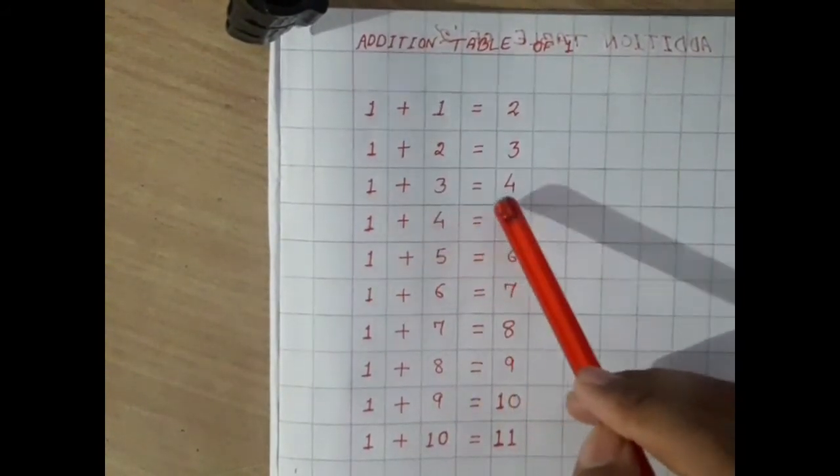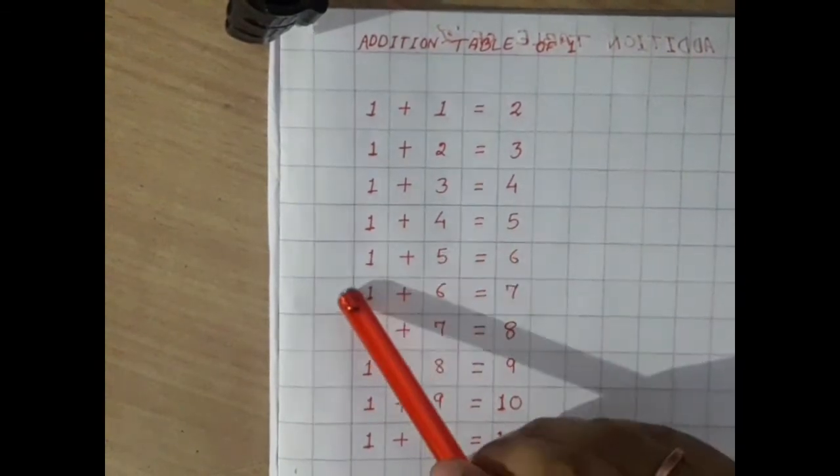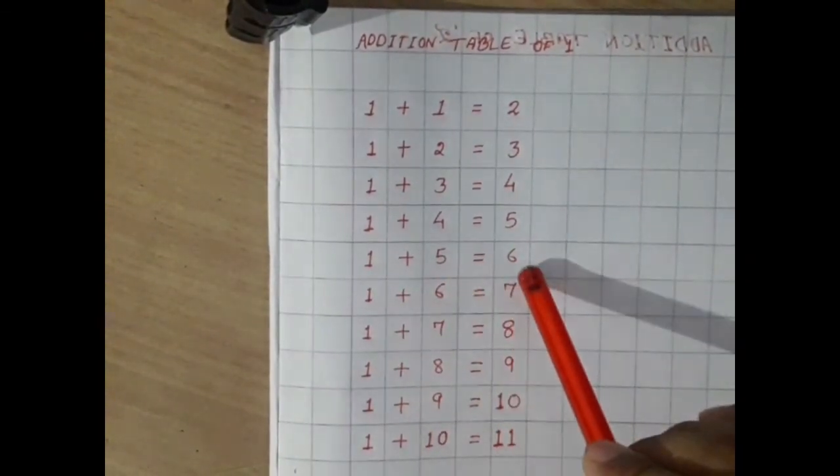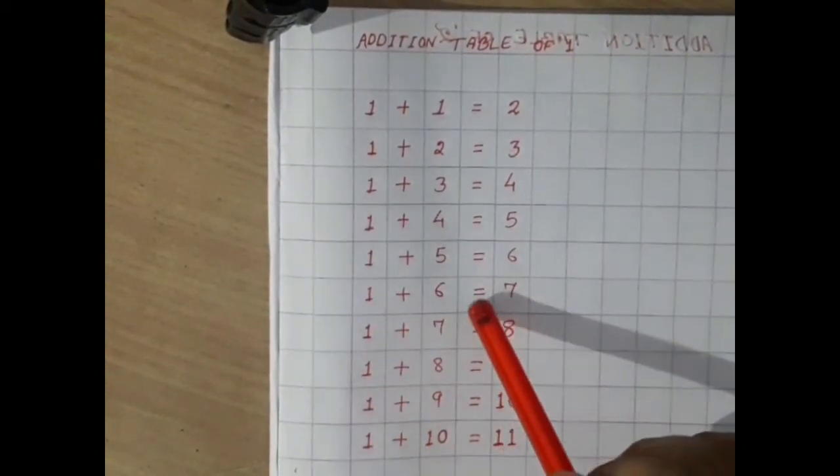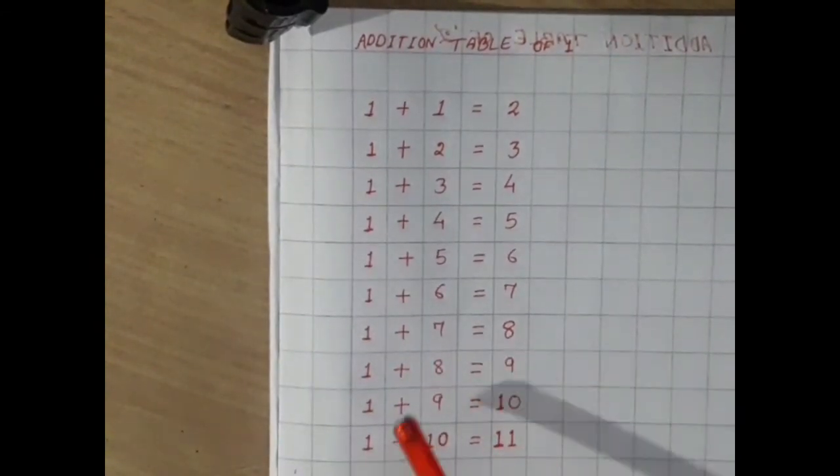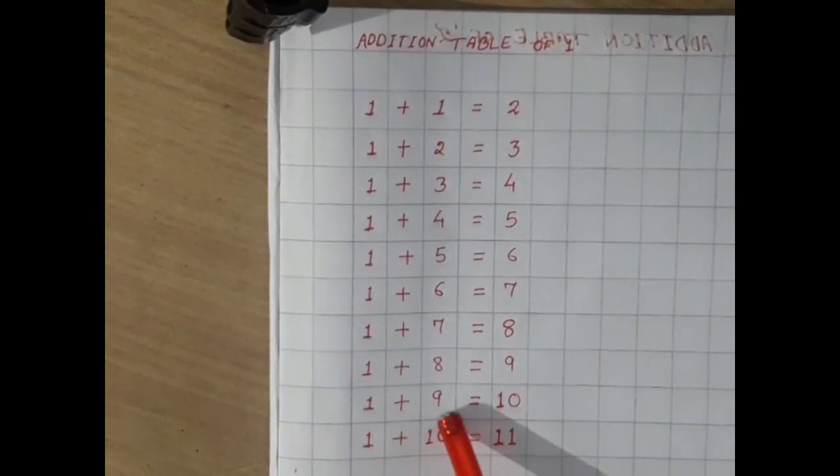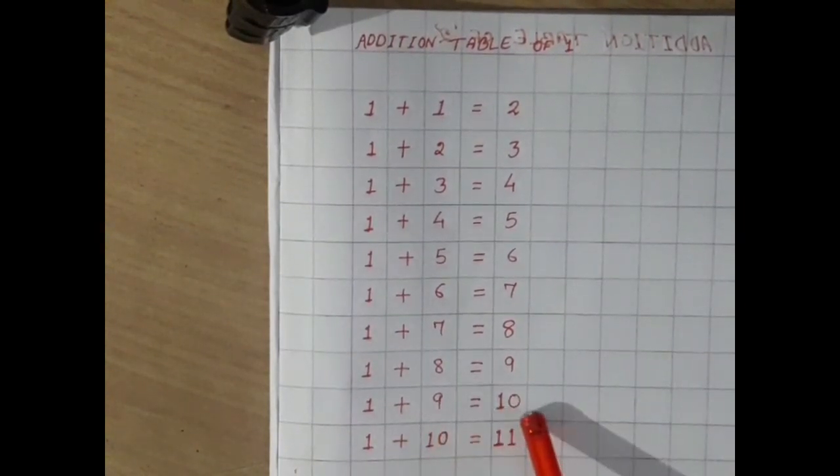1 plus 3 equal 4. 1 plus 4 equal 5. 1 plus 5 equal 6. 1 plus 6 equal 7. 1 plus 7 equal 8. 1 plus 8 equal 9. 1 plus 9 equal 10 and 1 plus 10 equal 11.